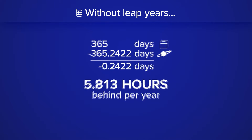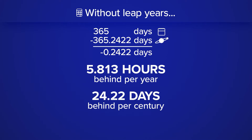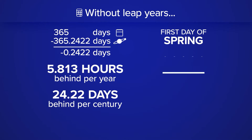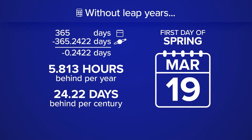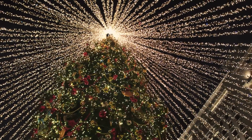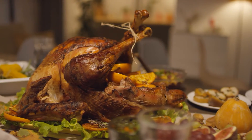While 5.8 hours is a small number, over centuries it would have an impact on our calendar. In 100 years, our calendar would be off by 24 days. So for example, instead of the first day of spring being on March 19th, without leap year it would be on February 24th. Holidays like Christmas and Thanksgiving would be earlier in the year.